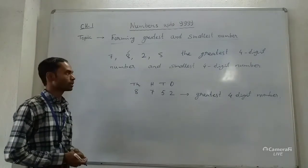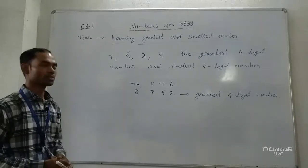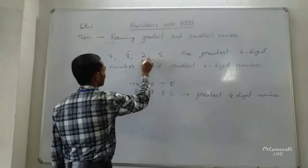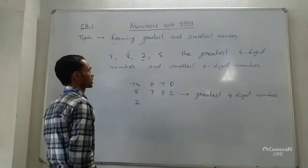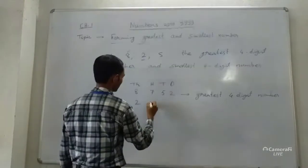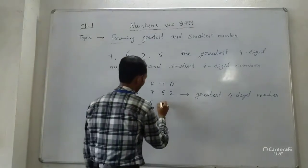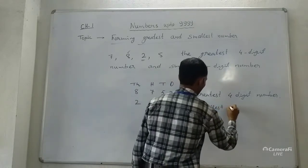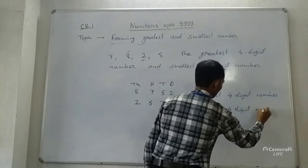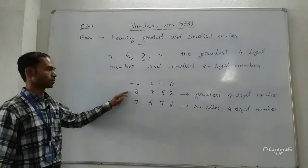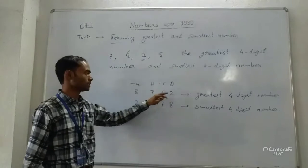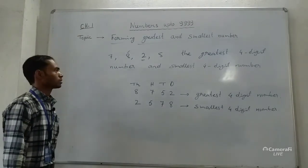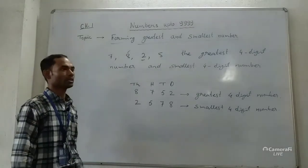To form the smallest 4-digit number, we choose the smallest digit first. 2 is the smallest, so we put 2 at the 1000s place. Next smallest is 5, then 7, then 8. So the greatest 4-digit number is 8752 and the smallest 4-digit number is 2578.